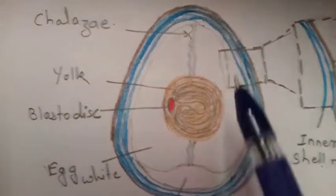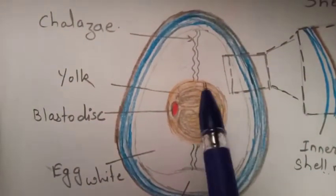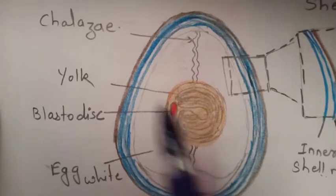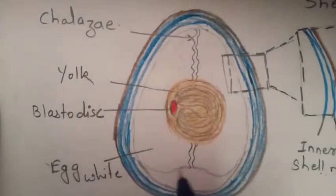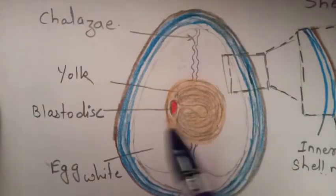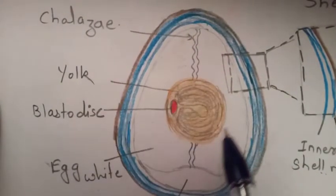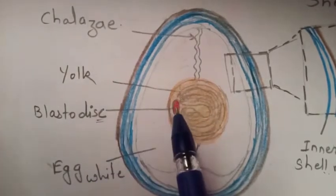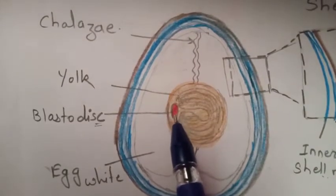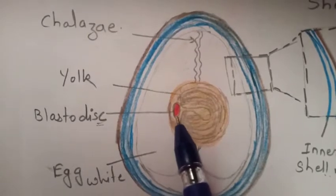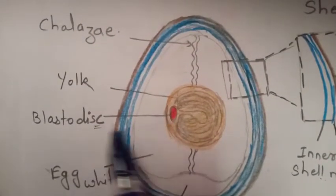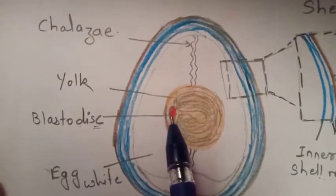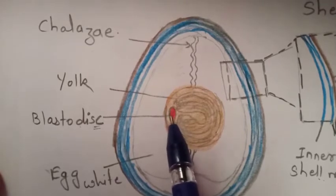Now the internal part: the yolk constitutes 32% of the egg material. The yolk is present, and a blastodisc is present on the yolk. Animal development starts from this blastodisc.